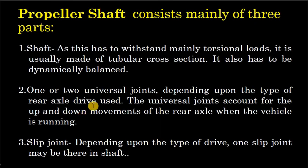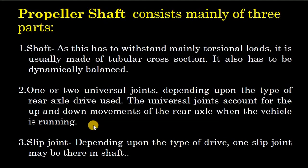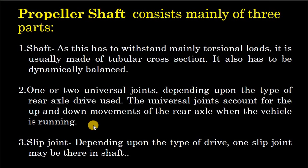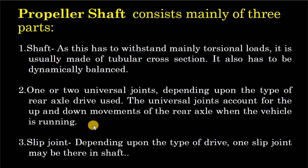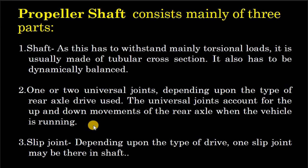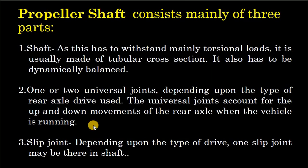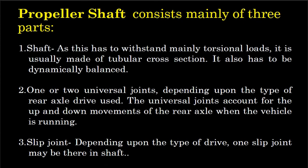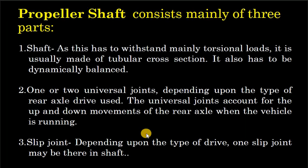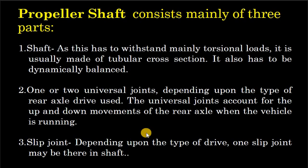One or two universal joints, depending upon the type of rear axle drive used — the universal joints account for the up and down movement of the rear axle when the vehicle is running. Universal joint से rear axle में वाहन के चलने के दौरान ऊपर और नीचे की गतियाँ होती हैं। Depending upon the type of drive, one slip joint may be there in the shaft — इससे rear axle के गतिशील होने पर आवश्यकतानुसार propeller shaft की लंबाई adjust करने में सहायता मिलती है।